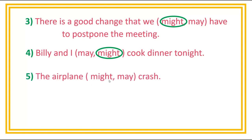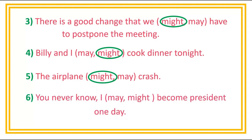Number 5: The airplane might/may crash. Answer is might. Number 6: You never know, I may/might become president one day. Answer is might.